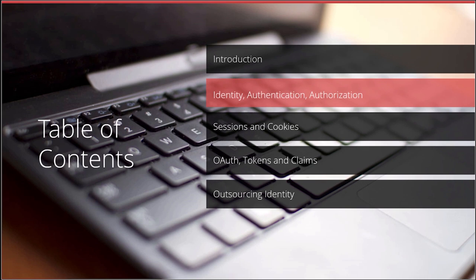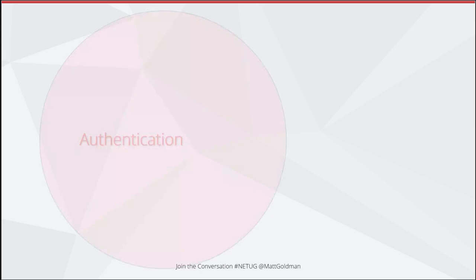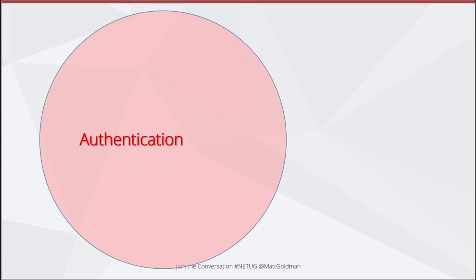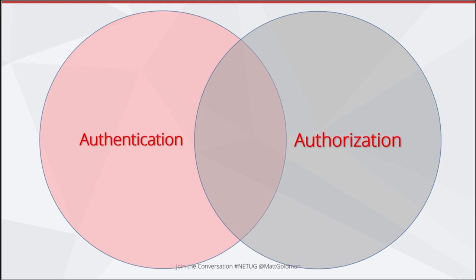So let's look at what identity, authentication, and authorization mean. Authentication is proving that you are who you say you are. The way we prove it is with a password, which is a very old technology. The industry is pretty much unanimous that passwords are not fit for purpose — we haven't yet come up with the next thing. There are alternatives like biometrics and RFID cards, but these tend to sit on top of passwords, so we haven't got rid of passwords yet.